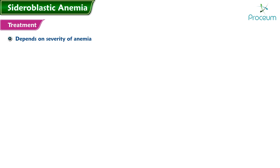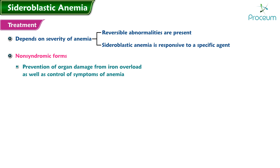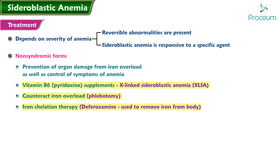Treatment: treatment of sideroblastic anemias depends on the severity of the anemia, whether reversible abnormalities are present, and whether the sideroblastic anemia is responsive to a specific agent. For patients with non-syndromic forms of congenital sideroblastic anemia, treatment is aimed at prevention of organ damage from iron overload as well as control of anemia symptoms. Vitamin B6 supplements are often effective in XLSA. To counteract iron overload, patients may undergo therapeutic phlebotomy — in which small amounts of blood are removed — or iron chelation therapy; drugs such as deferoxamine can be used to remove iron from the body.